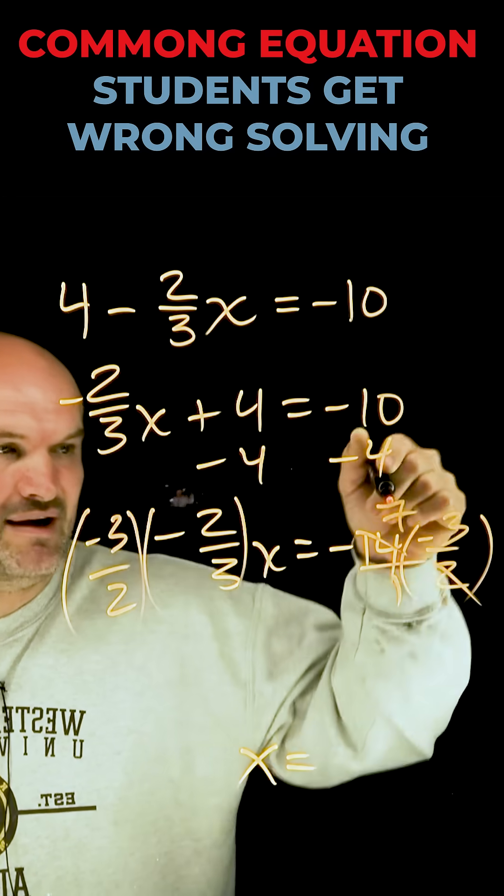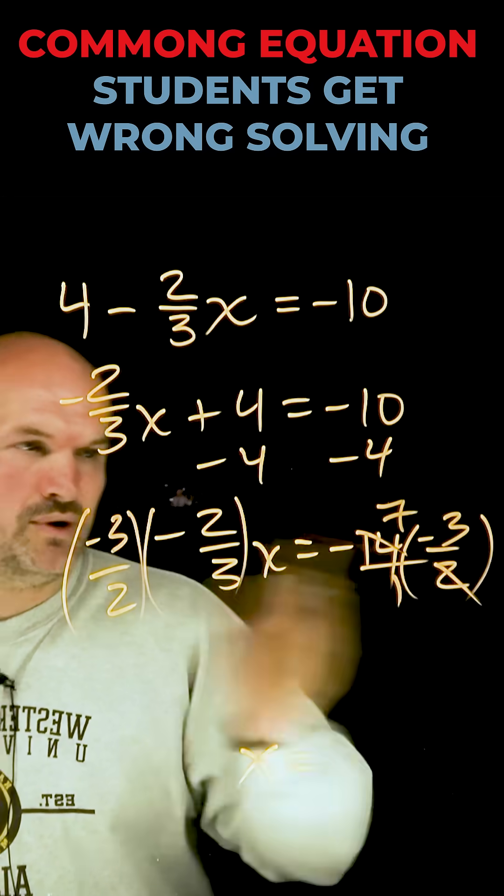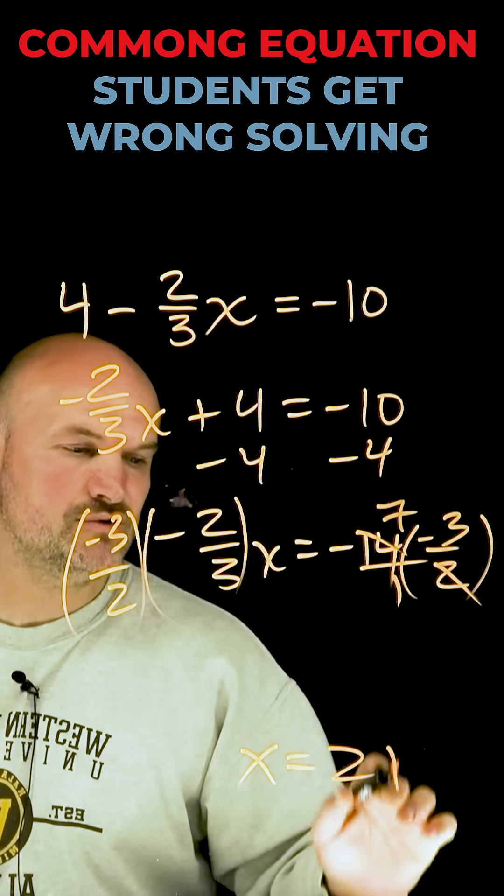So now I have 7 over 1 times negative 3 over 1, multiply straight across—you can see that's going to be 21.